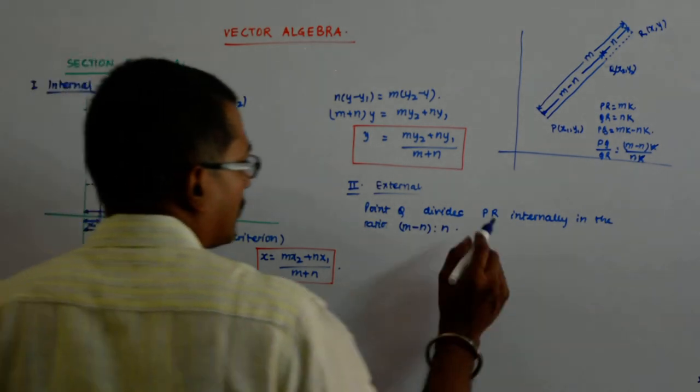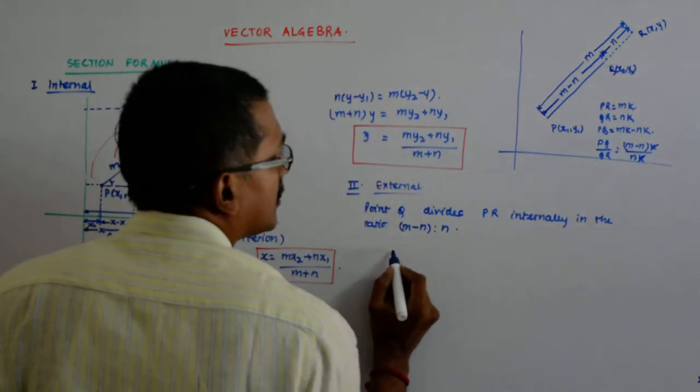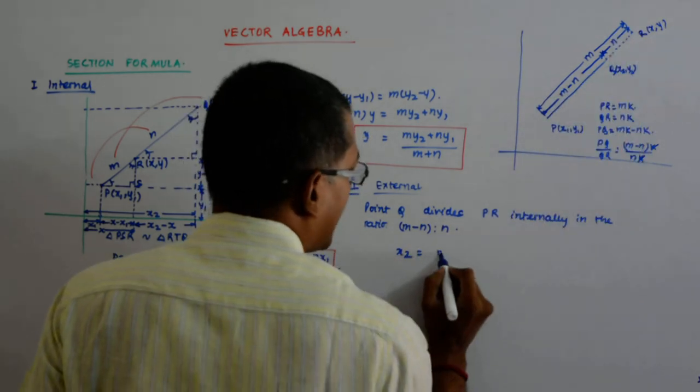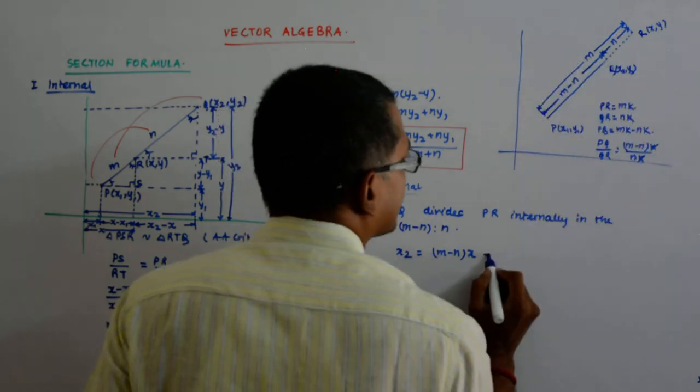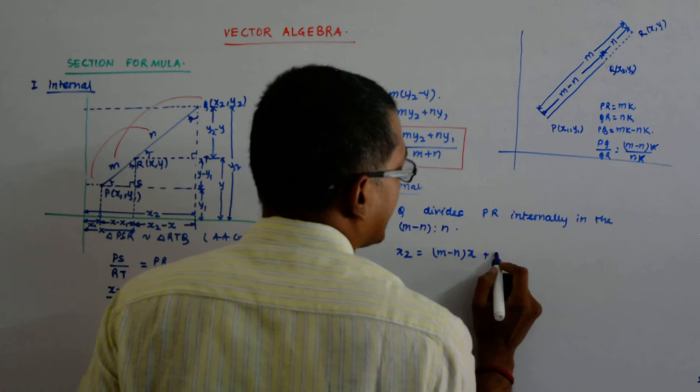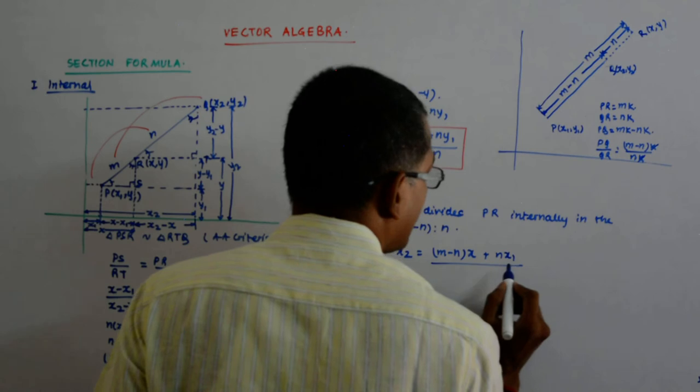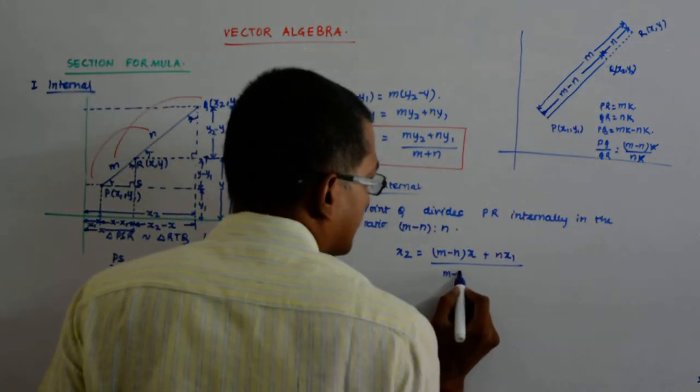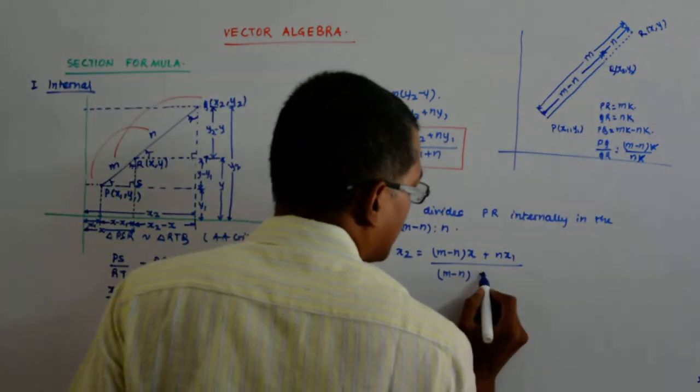So, what happens? We have just said this multiplies with this. So we get x 2 the internal one will be m minus n into x plus n into x 1 upon m minus n summation of that right, m plus n, m minus n plus n.